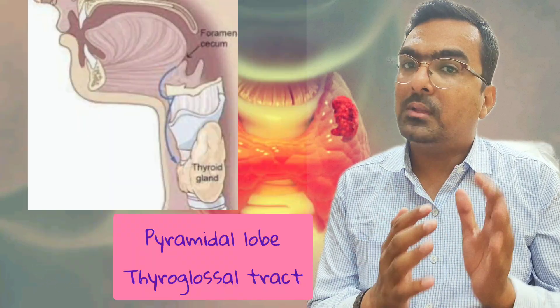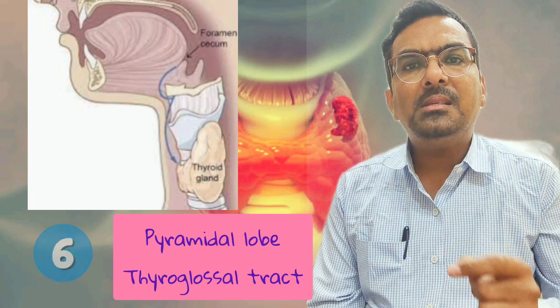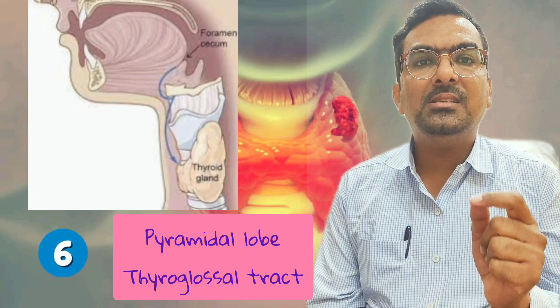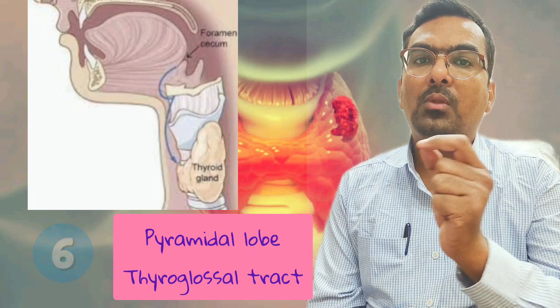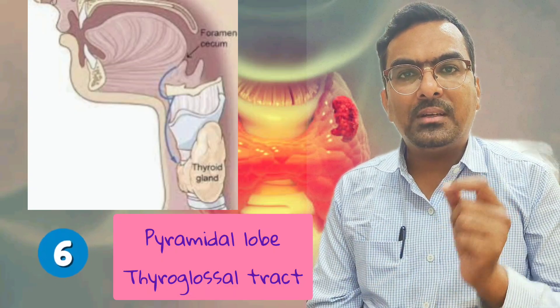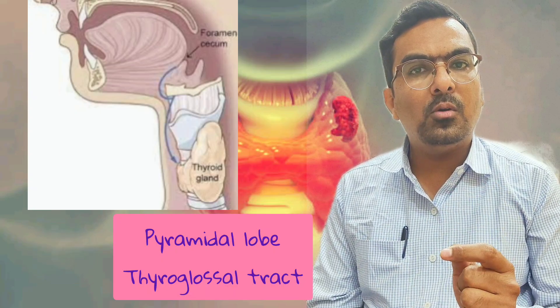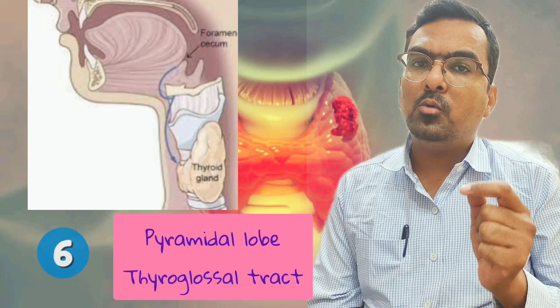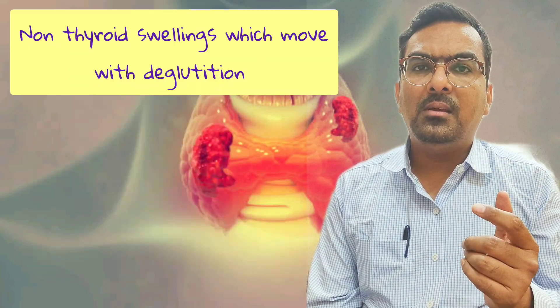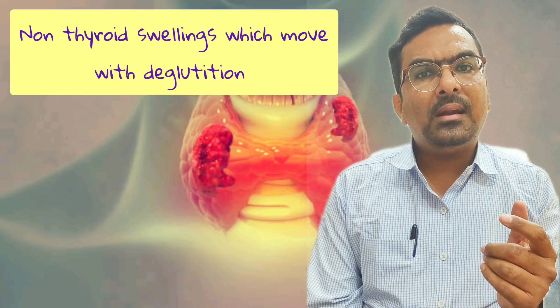The sixth reason is the pyramidal lobe or the thyroglossal tract. Sometimes a pyramidal lobe or thyroglossal tract attaches the isthmus to the hyoid bone. During deglutition, the movement of the tongue and hyoid bone contributes to the movement of the thyroid gland.